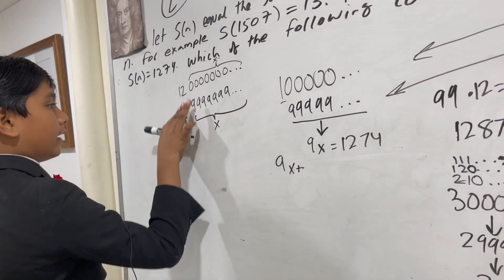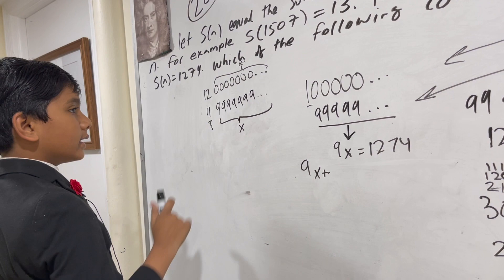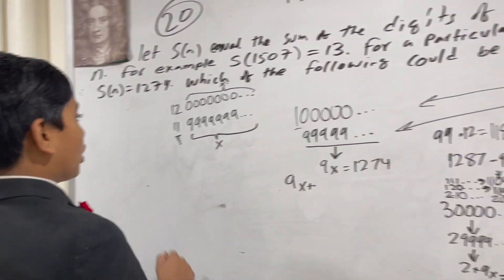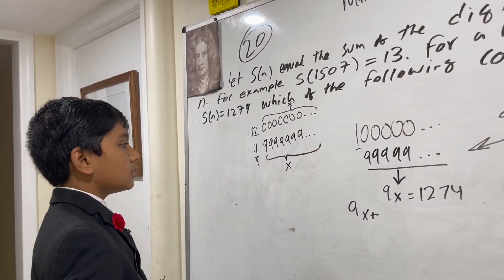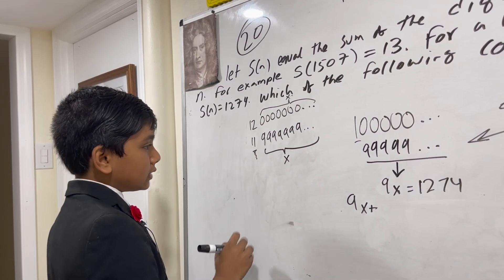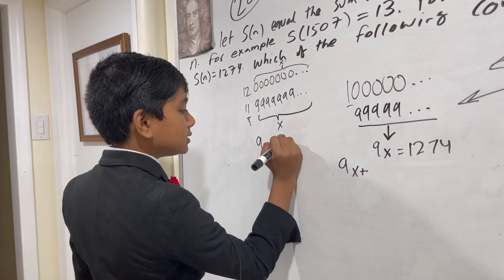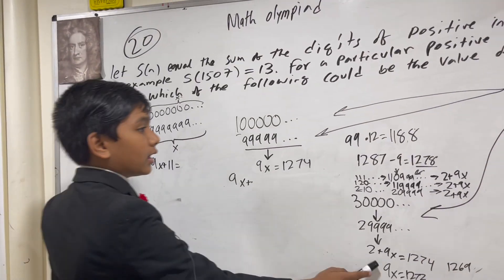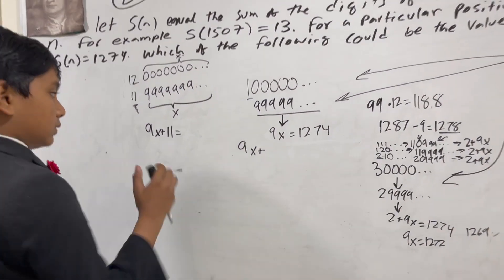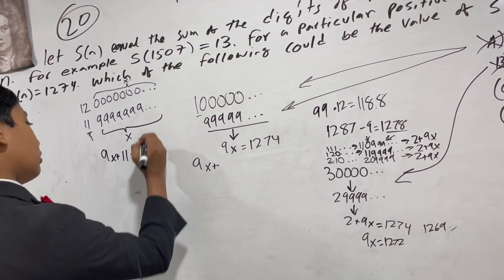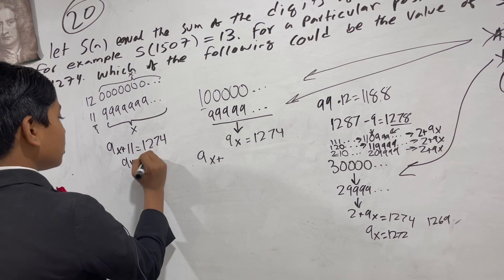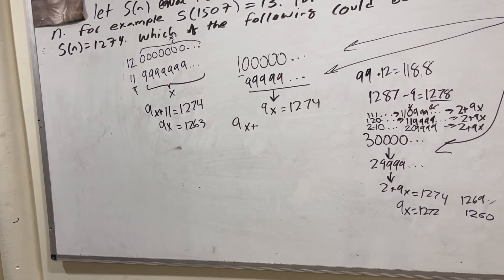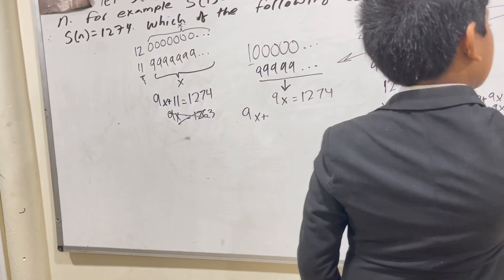For 12, we could also have 1 1 9 9 9 9 9 9 9 9, among other arrangements. But the key point is we just have 9x + 11 = 1274 for choice C (since 1 + 2 - 1 + carry considerations give 11). So 9x = 1263, and the nearest multiple of 9 to 1263 is 1260 — so that won't work either.